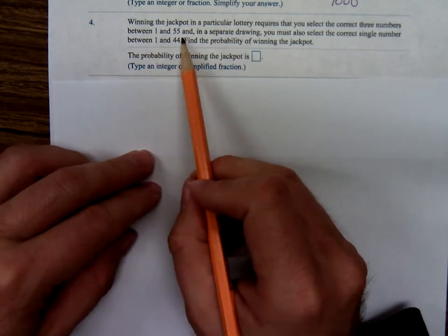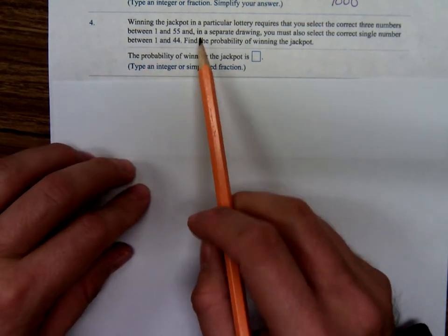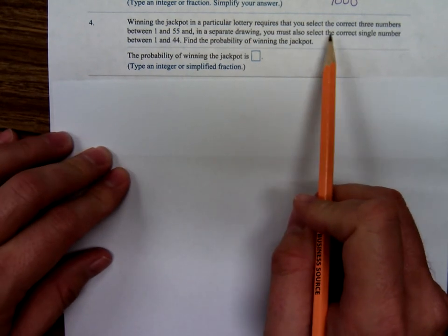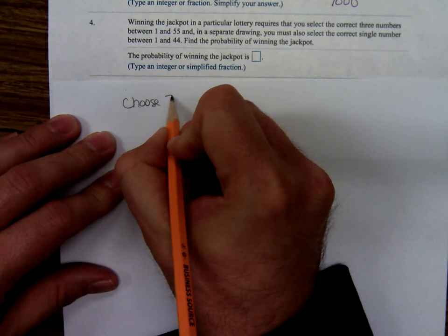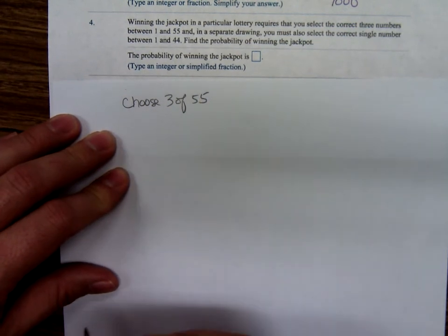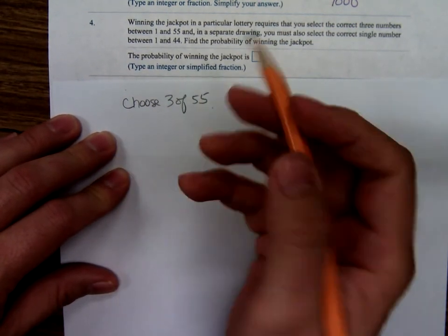Number four. Winning the jackpot in a particular lottery requires that you select the correct three numbers between one and 55. So you've got to choose three of the 55 numbers. And in a separate drawing, you must also select the correct single number between one and 44. So you're going to have to choose three of the 55. Notice, they don't have to be in any order.